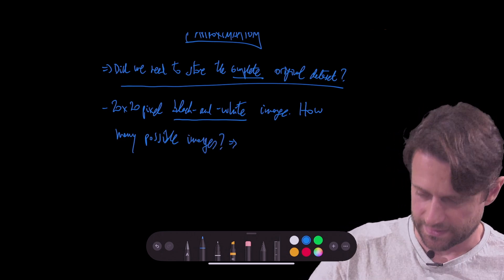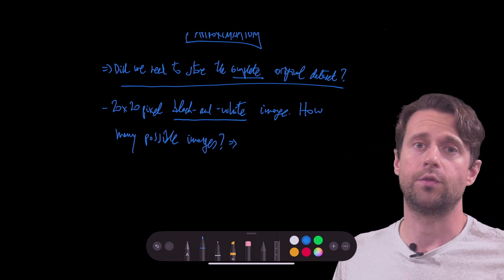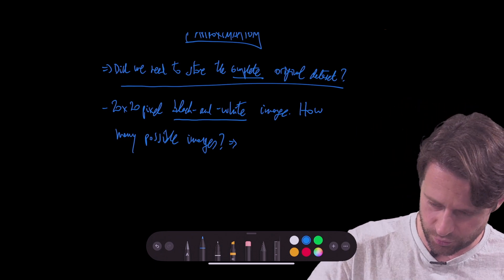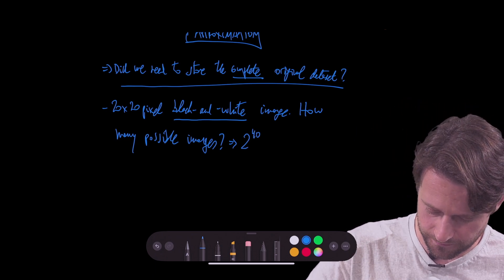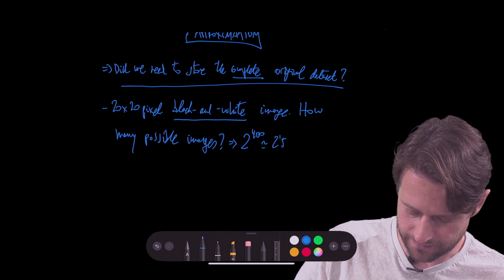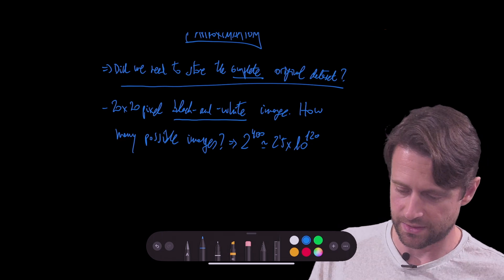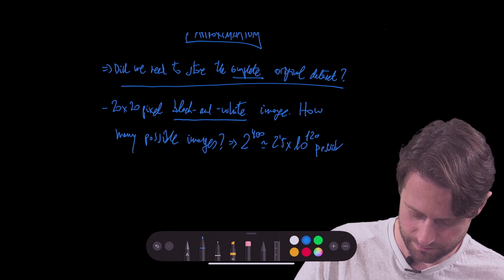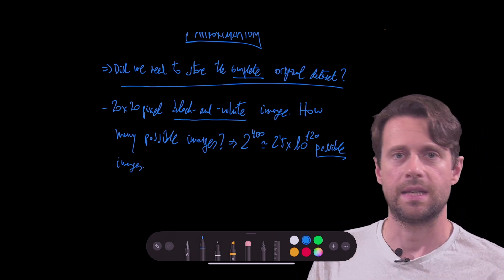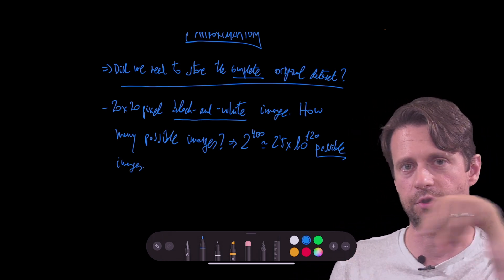Well, we have 20 times 20, which is 400 pixels, right? And those pixels can take two values, one or zero. So the number of possible combinations would be 2 raised to the power of 400, which is approximately 2.5 times 10 to the power of 120 possible images. If we just look at possible values of ones and zeros in that matrix of 20 by 20.